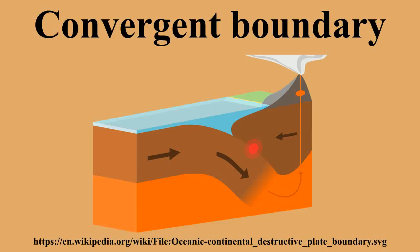At the surface, the topographic expression is commonly an oceanic trench on the ocean side and a mountain range on the continental side. An example of a continental-oceanic subduction zone is the area along the western coast of South America where the oceanic Nazca plate is being subducted beneath the continental South American plate. Surface volcanism typically appears above the melts which form directly above down-going plates. There is still debate in the geologic community as to why this is; however, the general consensus from ongoing research suggests that the release of volatiles is the primary contributor.